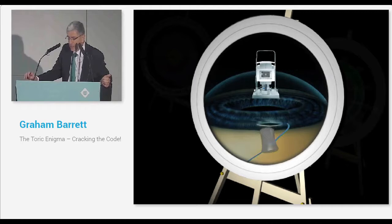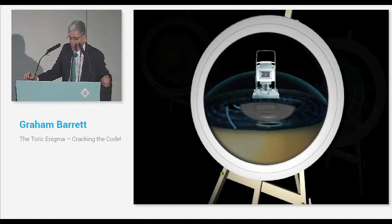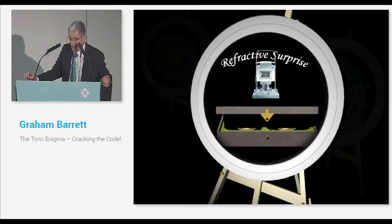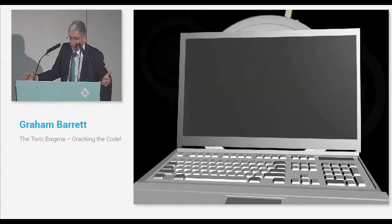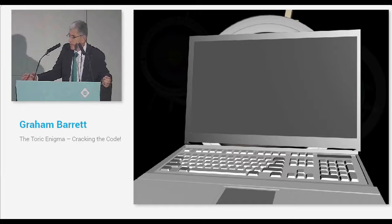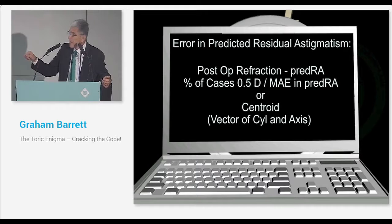Now, the enigma is that despite having precise measurements, despite precise alignment, we still sometimes get surprises with toric lenses. The talk is about trying to reduce those surprises. You need some terminology, and the first term is predicted residual astigmatism. This is what you predict to occur for your patient. It's simply the sum of the assumed or predicted toric cylinder power at the corneal plane plus the predicted corneal astigmatism from the measured K in the formula.